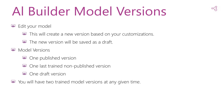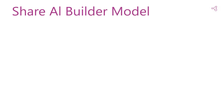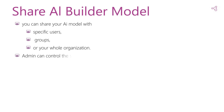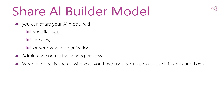When you create your model, you will be the only one who can see it. In order to allow other users to use your model, you have to share it. You can share your AI model with specific users or groups, or with your entire organization. The admin can control the sharing process of the AI Builder model and can disable the sharing feature from AI model makers. The security role will control that. Also, when a model is shared with you, you have user permission to use it in your apps and flows.